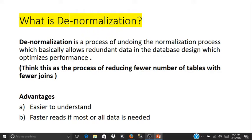Denormalization can be thought of as a process of undoing the normalization process, which basically allows redundant data in the database design to optimize performance. When talking about table design, think of this as a process of reducing the number of tables and having fewer joins between those tables.